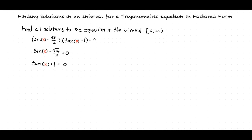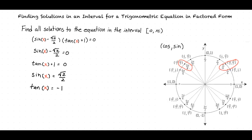Looking at this equation, I know that I want to find values for x that will make sine x equal to square root of 2 over 2, and tangent x equal to negative 1. Looking at the unit circle, we can see that sine x equals square root of 2 over 2 when x equals π over 4 and 3π over 4.